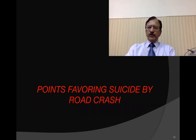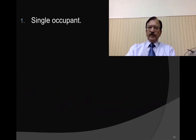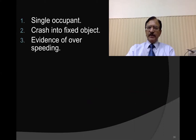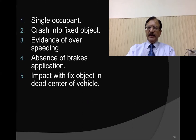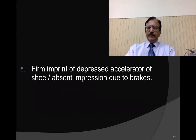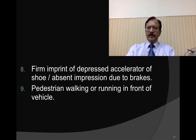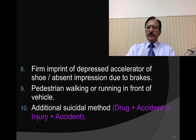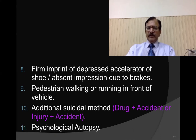Some points which favor a suicide by road crash: usually a single occupant crashes into a fixed object, with evidence of over-speeding, absence of brake application, impact with a fixed object at the dead center of the vehicle, a straight road and clear weather, and possibly a suicide note. Firm imprint of the depressed accelerator on the shoe is absent. A pedestrian walking or running in front of the vehicle may see the vehicle coming. Additional suicide methods include drugs, alcohol, or a combination. A complete psychological autopsy is necessary in these cases.